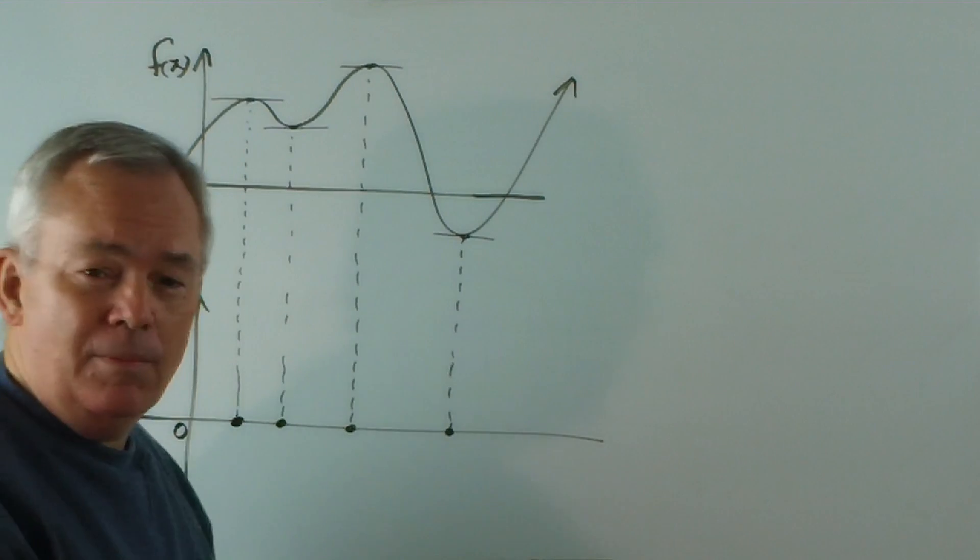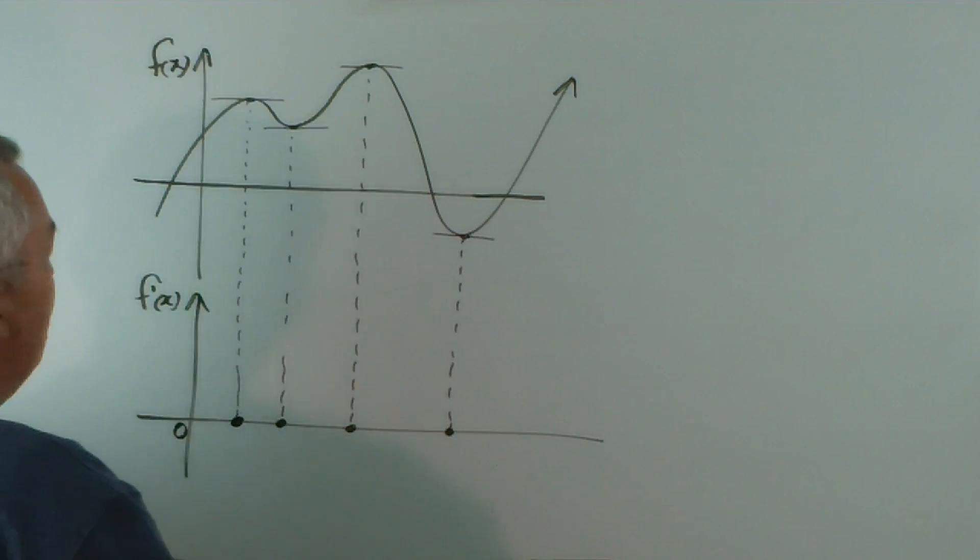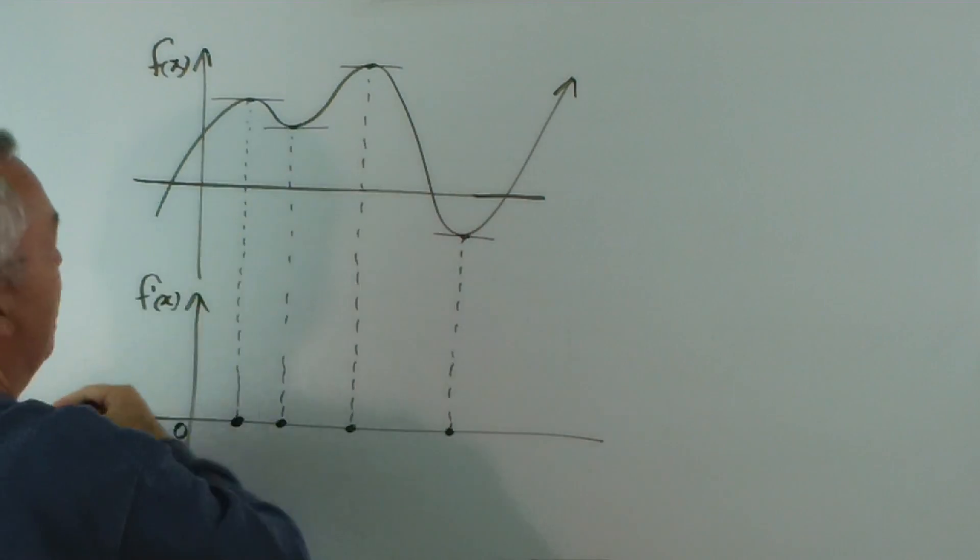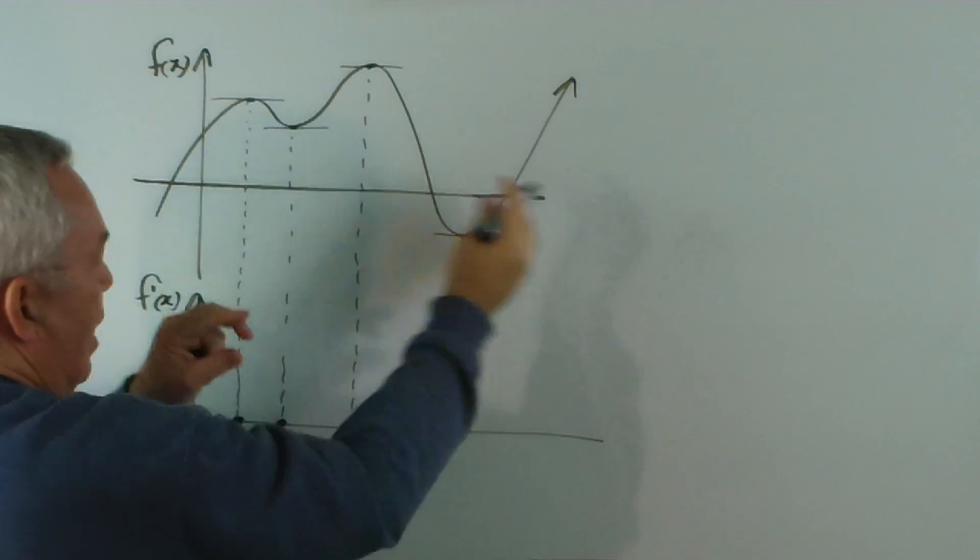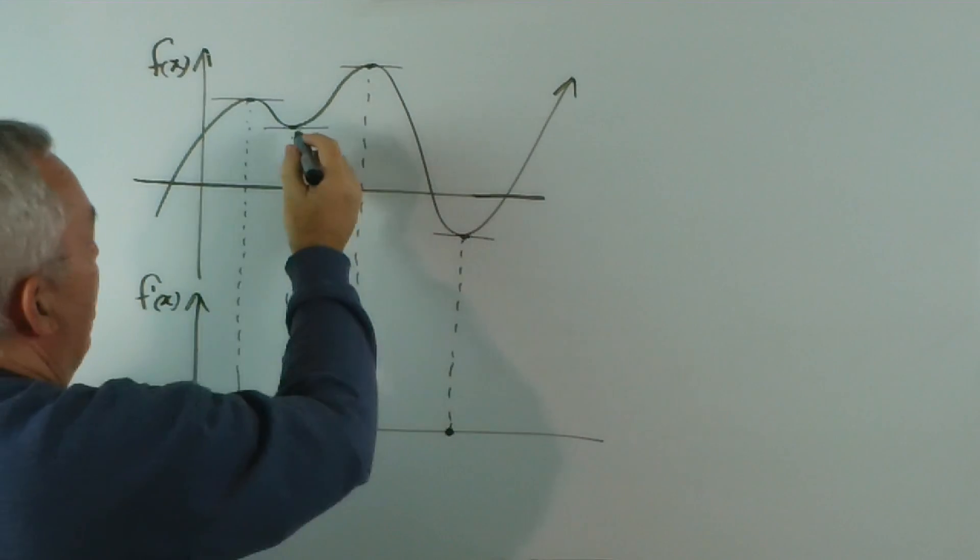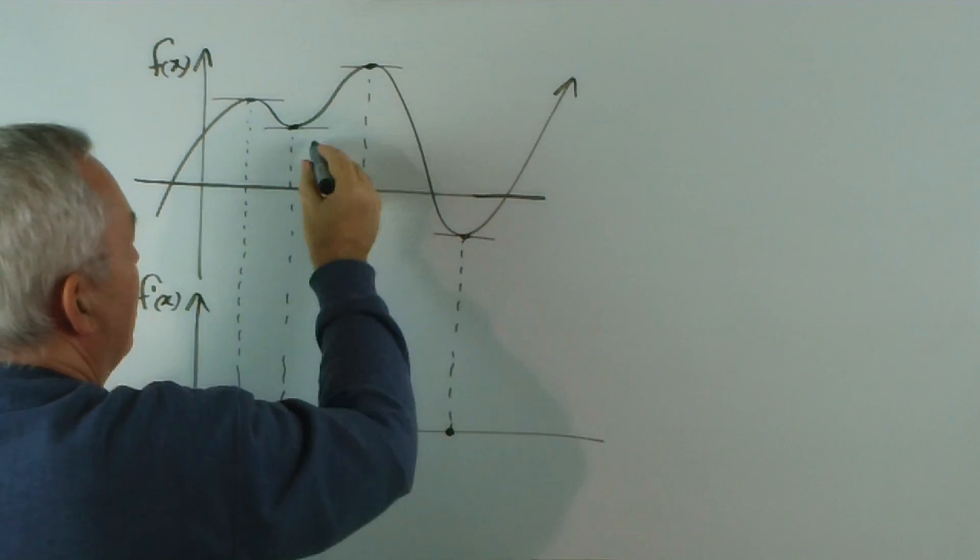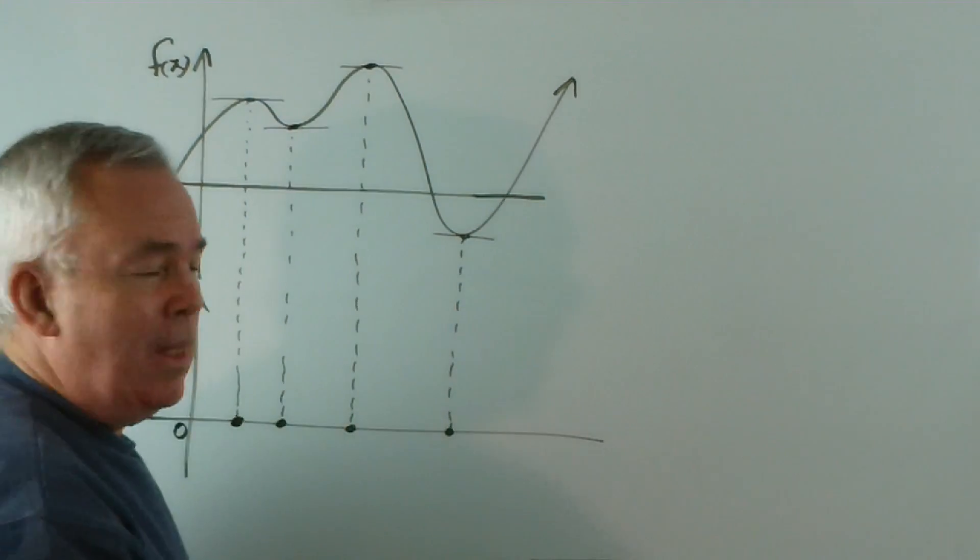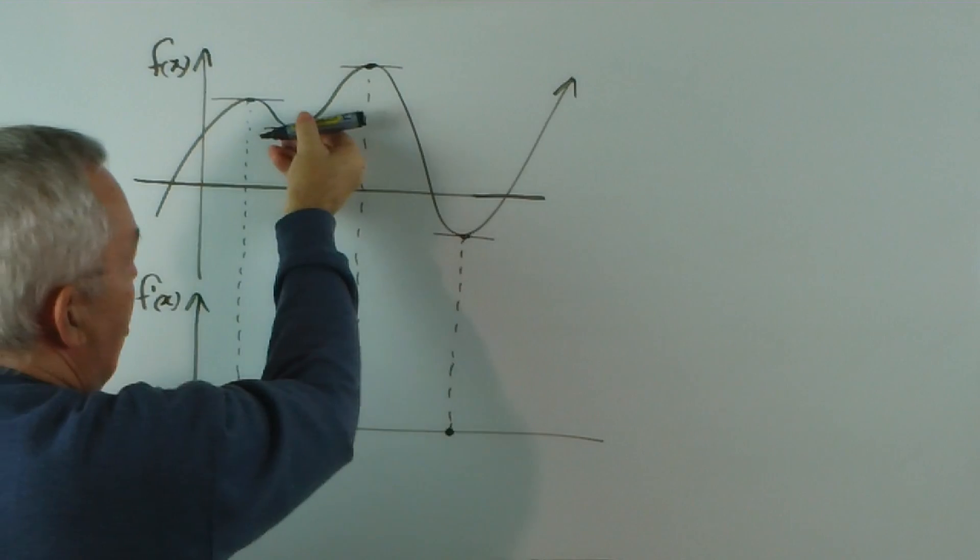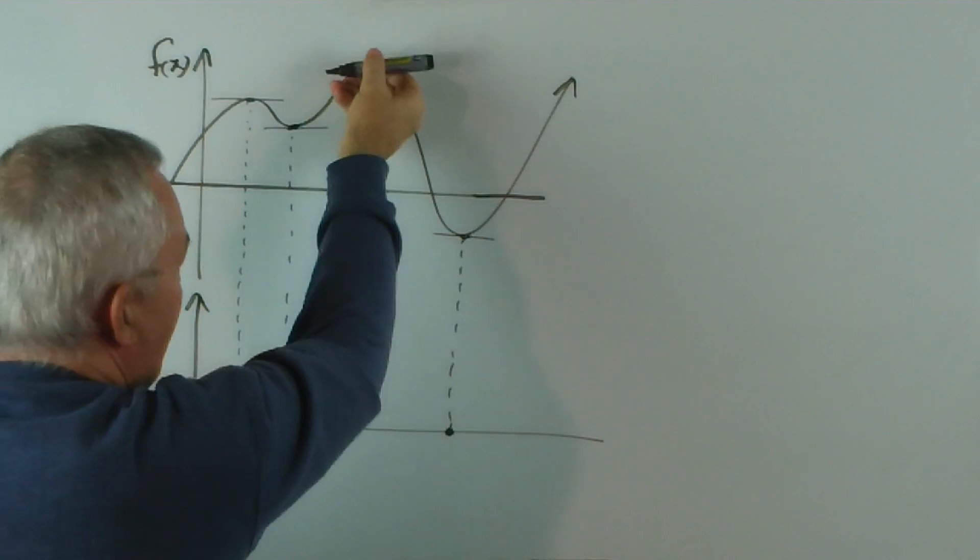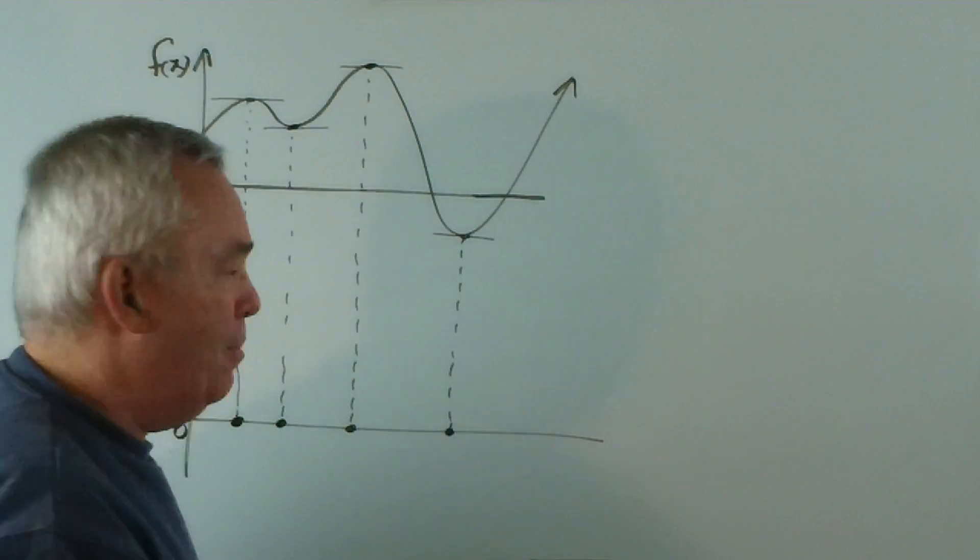Once we have established that, we're simply invited to inspect the graph and note, for example, we could start anywhere we like, and note that the gradient from here to here is positive. It starts off very gently positive, steepens up, and then it levels off again. But, nonetheless, it's positive the whole time.